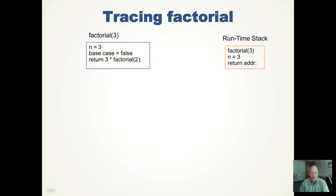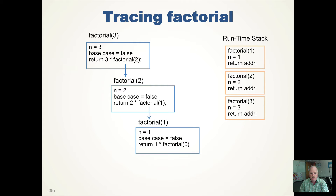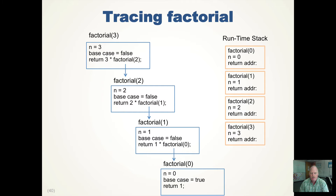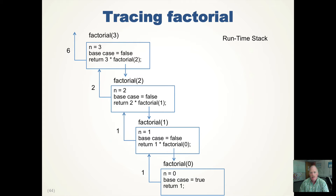For factorial three: the base case is false, you can see we have a runtime stack. We call factorial two and push that activation record, call factorial one and push that record, then call factorial zero. We return one, popping the activation record off the stack. We now have the answer for factorial zero, so we multiply that by one and return one. Now two times one is two; we return that and pop that method off. Three times two is six, and we pop that off, then return to whoever called factorial with the correct answer of six.